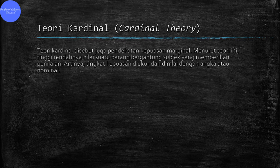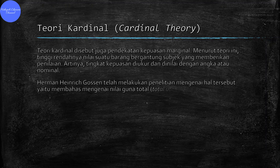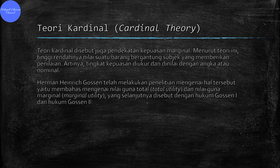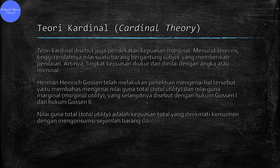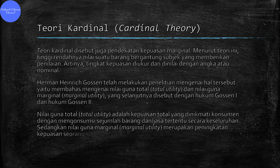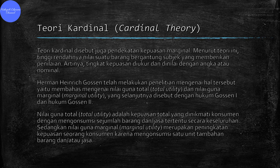Hermann Heinrich Gossen, seorang pakar ekonomi asal Jerman, melakukan penelitian mengenai hal tersebut. Gossen membahas nilai guna total atau total utility dan nilai guna marginal atau marginal utility, yang selanjutnya disebut dengan Hukum Gossen 1 dan Hukum Gossen 2. Nilai guna total atau total utility adalah kepuasan total yang dinikmati konsumen dengan mengkonsumsi sejumlah barang dan atau jasa tertentu secara keseluruhan. Nilai guna marginal atau marginal utility adalah peningkatan kepuasan seseorang konsumen karena mengkonsumsi satu unit tambahan barang atau jasa.